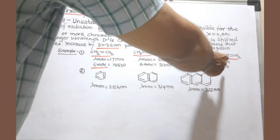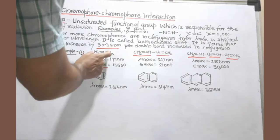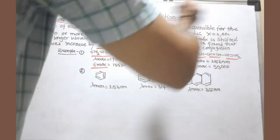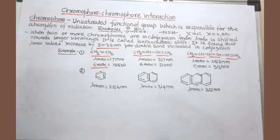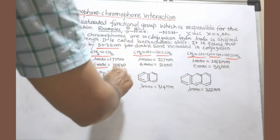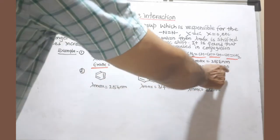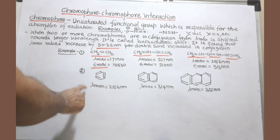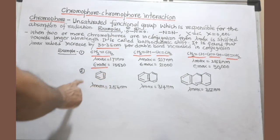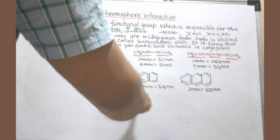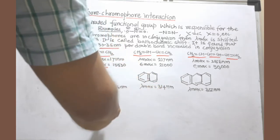As we move from one double bond to three double bonds, the lambda max value is shifted toward the red end of the spectrum. Not only lambda max — the E max value also increases, so intensity is also increased. For example, in benzene there are just three double bonds in conjugation, but in naphthalene the conjugation is increased, so the lambda max value is also increased.